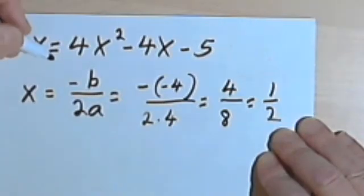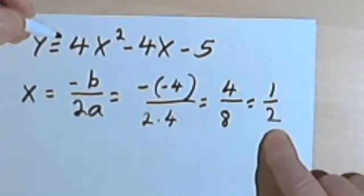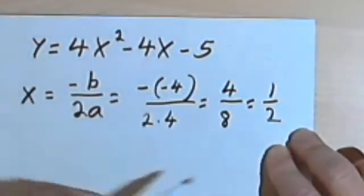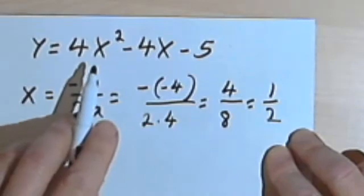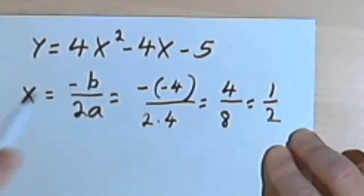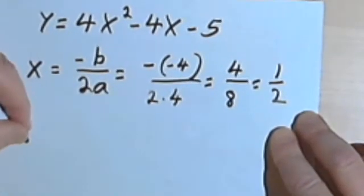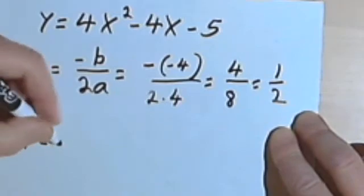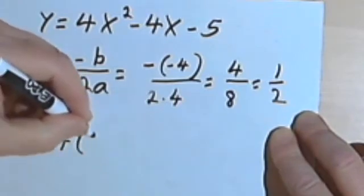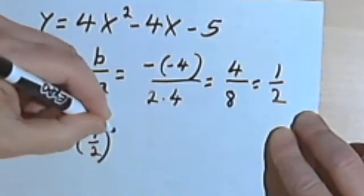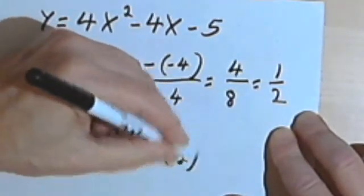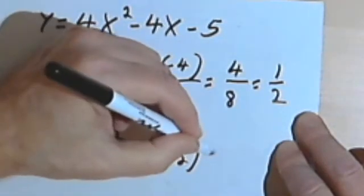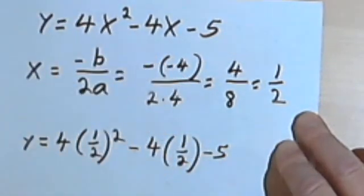So the first part of my ordered pair, the x-value, is going to be one-half. Now I want to take that one-half and plug it in where my x's were to find out what the y is. So I'm going to find out that y equals 4 times one-half squared minus 4 times one-half minus 5.